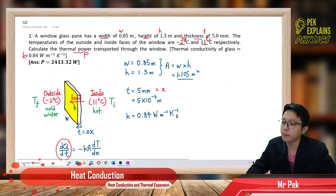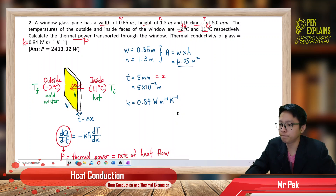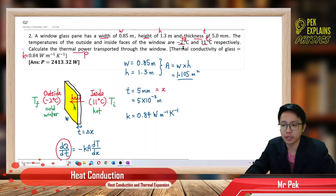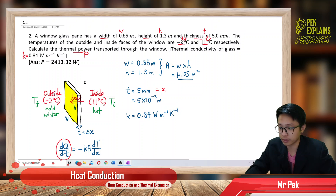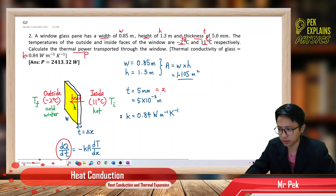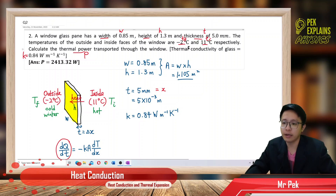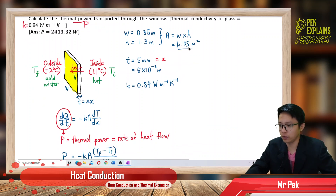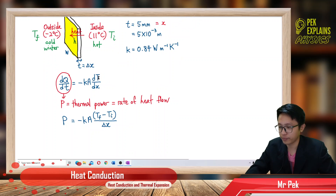We have the thermal conductivity of glass, K, which is 0.84 watt per meter per Kelvin. The temperature is in degrees Celsius. Do we need to change to Kelvin? No, because we are dealing with the change of temperature here.